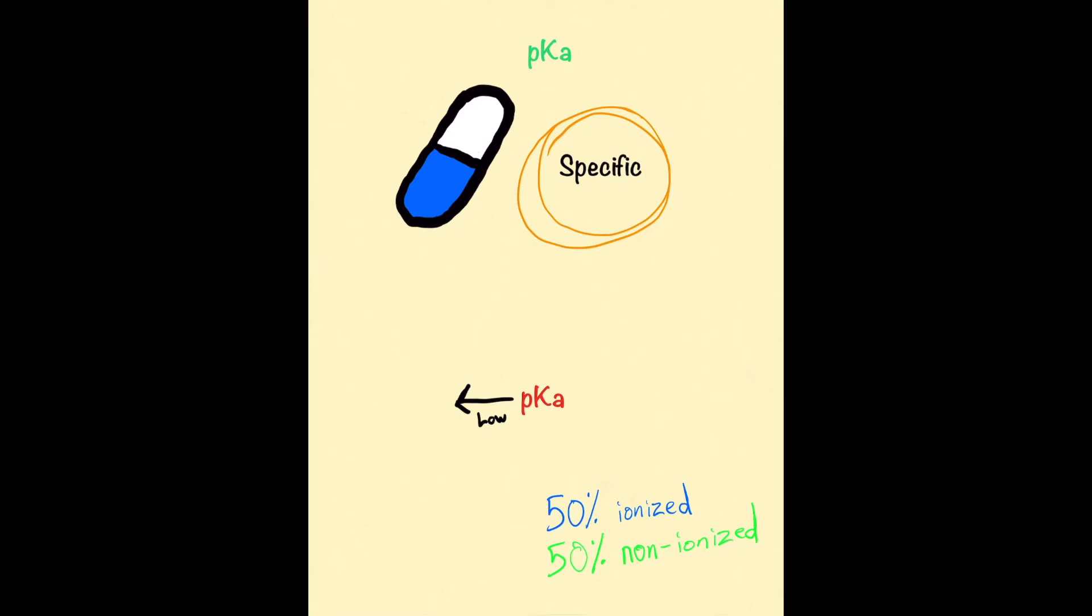This is just a fancy way of saying that when the pKa of a drug is lower, the more acidic it is, just like pH. The pKa of a drug is the pH where the drug is 50% ionized and 50% non-ionized.